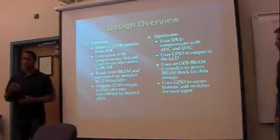The basic design of our software was to take in the 12 bits through the ADC and convert that to an 8-bit signal. We used V-Law conversion which compresses the 12-bit into 8 bits. This allowed us to store more samples in the BRAM and allow for more samples in total. Then it reads that 8-bit signal, converts it back to 12, and outputs it through the DAC. For hardware design, we use the SPIs to communicate with ADC and DAC, GPIO for the LCDs and buttons and switches, and the OPB BRAM for memory storage.